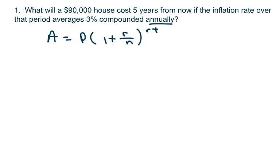So we're just looking for the final amount. We have A equals, our principal is 90,000, that's our initial amount, 1 plus our interest rate is 0.03. We don't have to divide because my N equals 1.